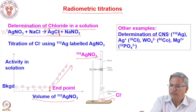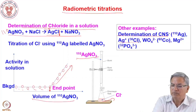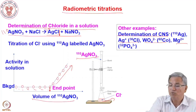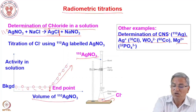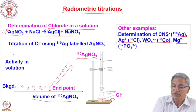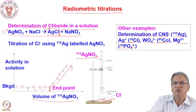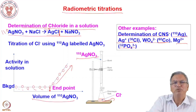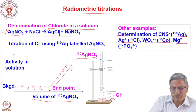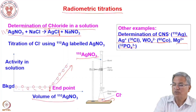The same approach works for thiocyanate, silver ions, tungstate, and magnesium — using suitable radiolabeled titrating agents. For thiocyanate you can use silver-110; for tungstate, cobalt-60; for magnesium, phosphate ions. However, this technique is not very common nowadays because there are much better techniques available for these experiments.